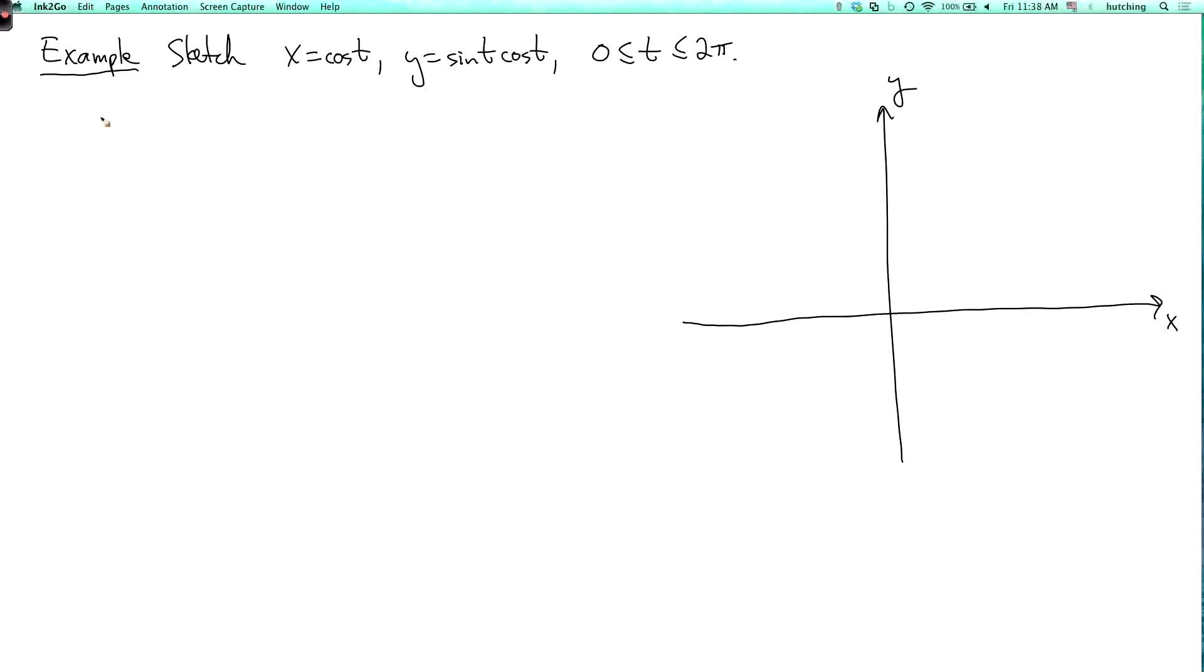Now we'll notice that this curve hits the origin when cosine t equals 0. So this hits the origin when cosine of t equals 0. That is to say when t equals pi over 2 and 3 pi over 2. So this curve is going through the origin twice. And we can say what is the slope when it hits the origin?